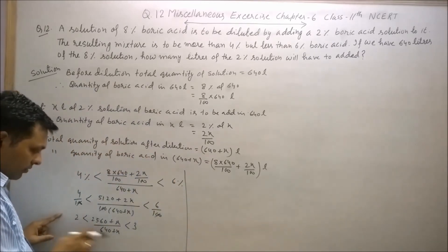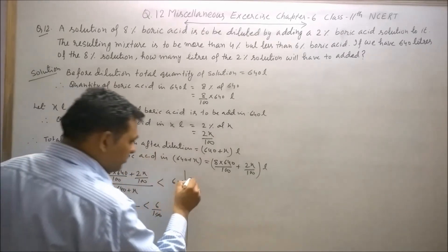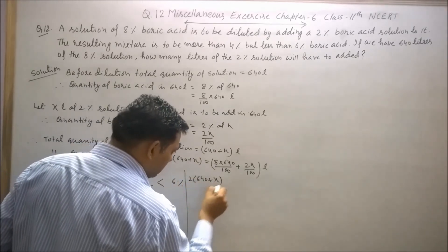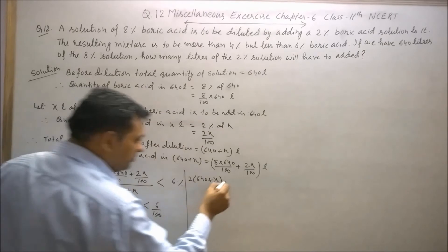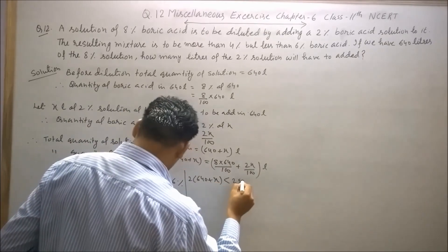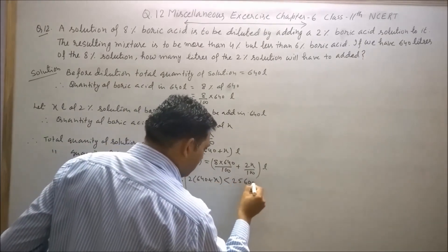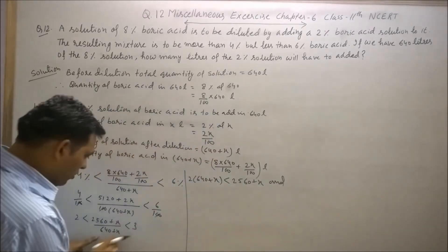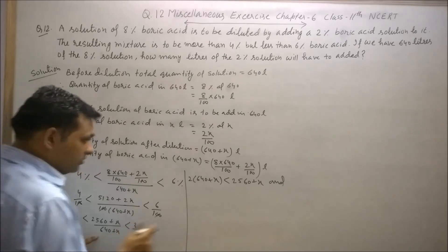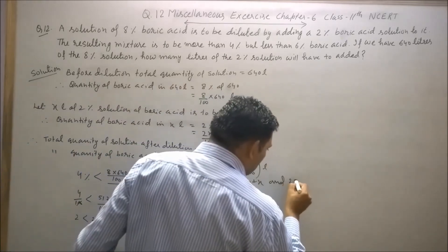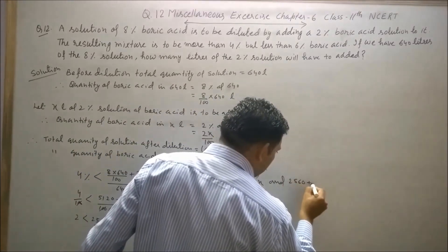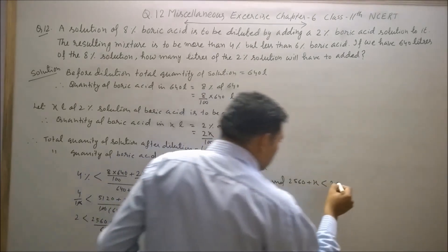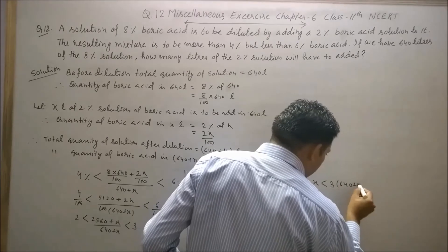Now cross-multiply these two numbers: 2 into 640 plus x is less than 2560 plus x, and 2560 plus x is less than 3 times 640 plus x.